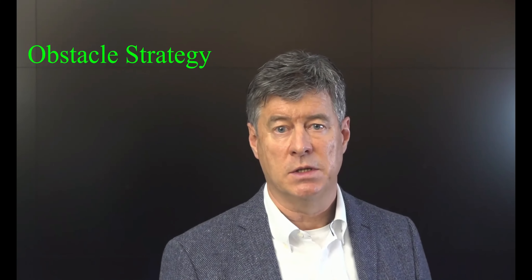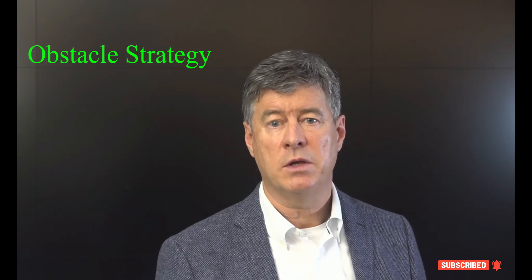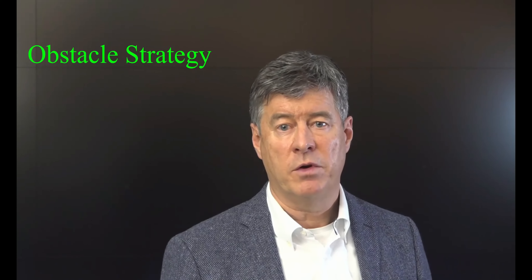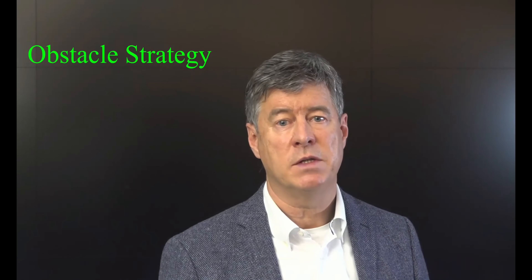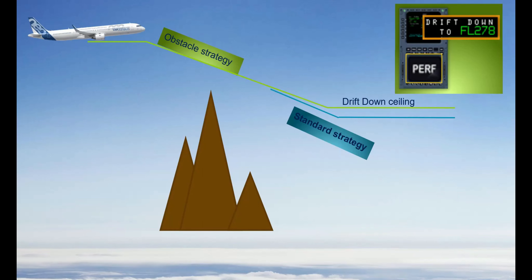If you encounter an engine failure over a mountainous area, you should apply the obstacle strategy. This strategy consists in descending at the green dot speed until you clear the obstacle or until you reach the drift down ceiling. The green dot speed corresponds to the best lift-to-drag ratio speed where aerodynamic efficiency is maximum. Therefore, the obstacle strategy enables to minimize the altitude loss versus the distance covered. Once the descent path is clear of obstacles, you can apply the standard descent strategy.